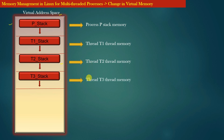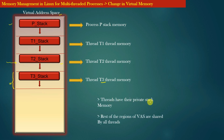The same applies when a process creates another thread T3. The operating system keeps on allocating more virtual memory from the process virtual address space to be used as stack memory by the respective threads. Remember, each of these virtual memory regions is private to the corresponding thread. Thread T3 has no business accessing the stack memory belonging to thread T2. So threads have their own private stack memory; the rest of the regions of the virtual address space of a process are shared by all threads.